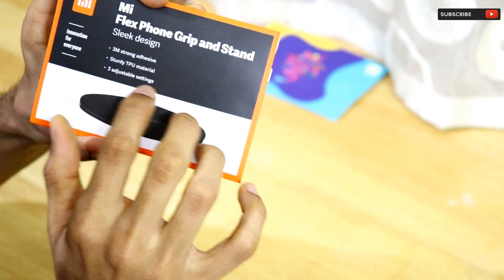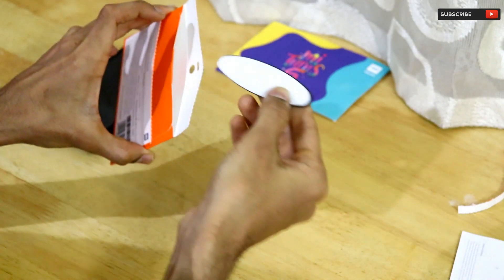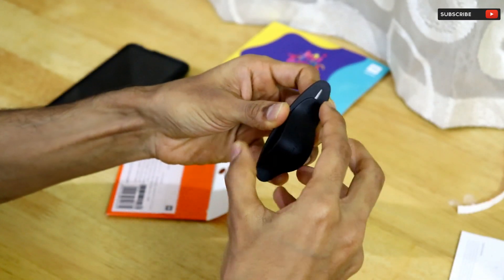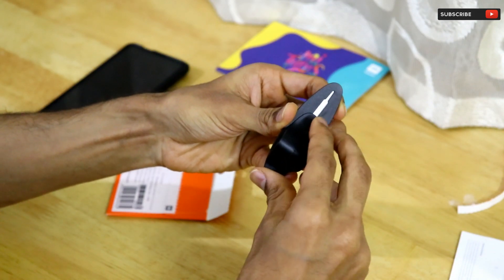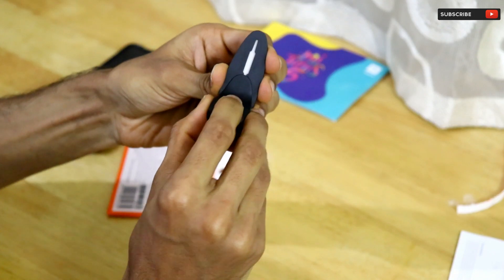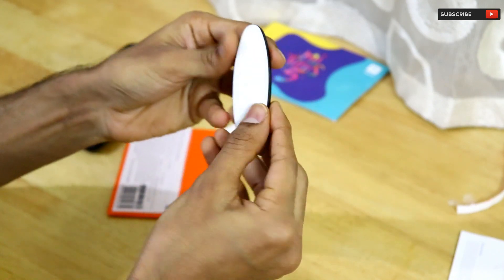This is the Mi Flex Grip. It has three-way adjustable settings - this is for the center, this is for middle, and this is the last. So these are the three adjustable settings. You can just push it like this and you're good to go.